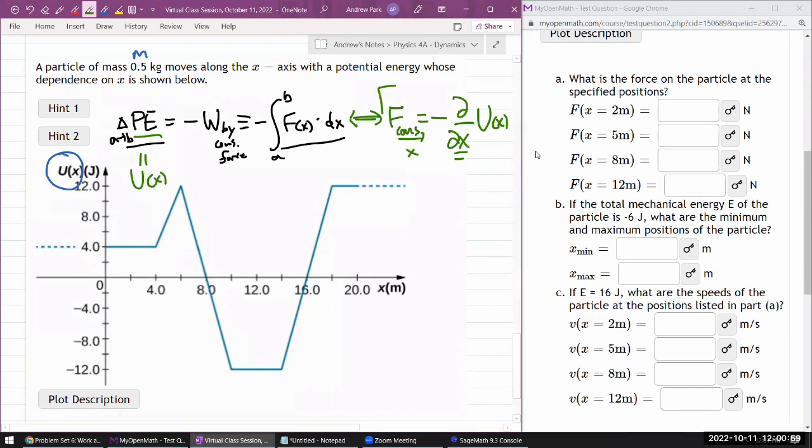So this equation is what they expect us to use. They've given us the functional form for the potential energy, so they expect us to know how to take the derivative with respect to x and reverse the sign, and that's going to be the force. So let's do that here.